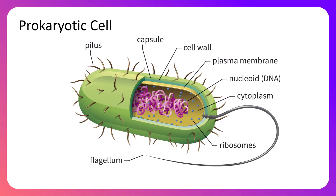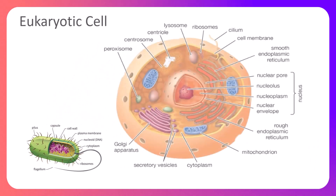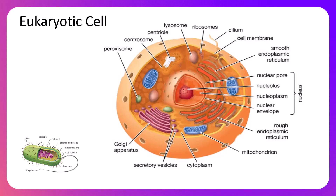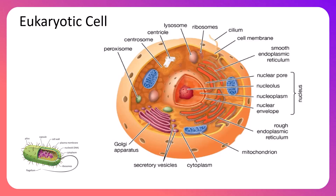The prokaryotic cell is very simple — it lacks many of the organelles you may be accustomed to seeing. Comparing it to the eukaryotic cell, you can see it is far less complex. As for the term eukaryotic, it shares the root 'karyo' meaning kernel, but the prefix 'eu' refers to 'true,' so eukaryotic literally means 'true nucleus.'